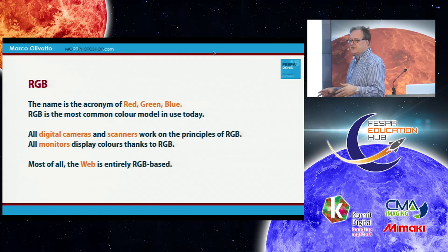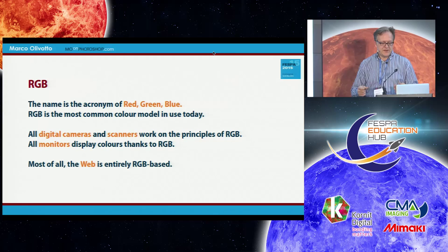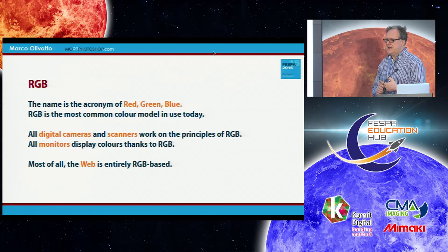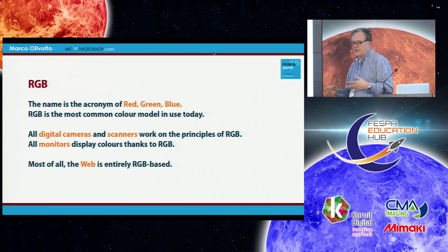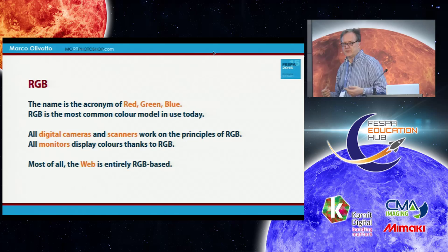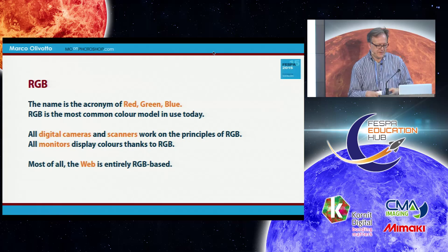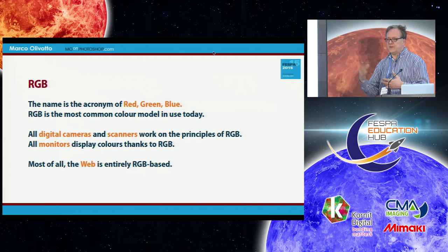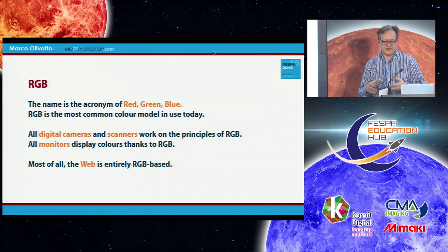Let's start with RGB. The name is the acronym of red, green, and blue — the three primary colors of additive synthesis. It is the most common model today because all digital cameras and scanners acquire data based on the principles of RGB. Every monitor in the world works with RGB. The web, being something seen on a display, monitor, or tablet, is RGB-based.